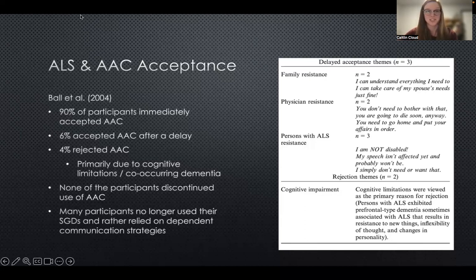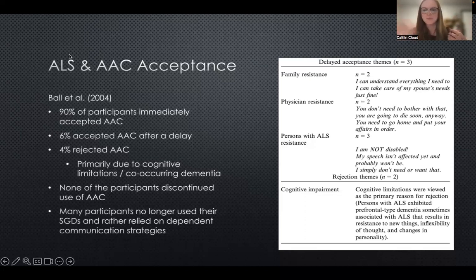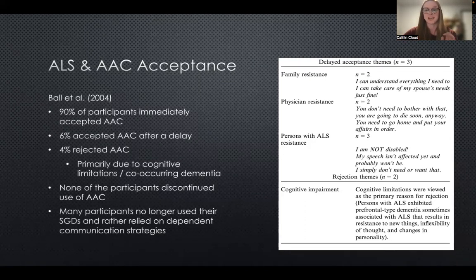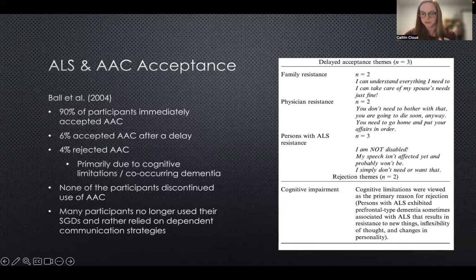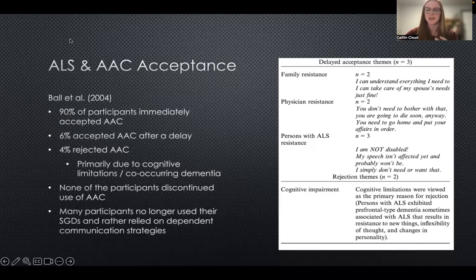There was some resistance from physicians in this 2004 study — some saying 'there's nothing we can do.' And sometimes the person with ALS won't have accepted their condition yet, saying things like 'I'm not disabled, my speech is fine.' Ultimately, people who said those things did eventually accept AAC — maybe a bit later as they were experiencing a speech decline. Cognitive limitations were seen as the primary factor that led to rejection of AAC. The presenter adds that awareness of ALS and advocacy has improved so much over the years that those attitudes have probably improved considerably.